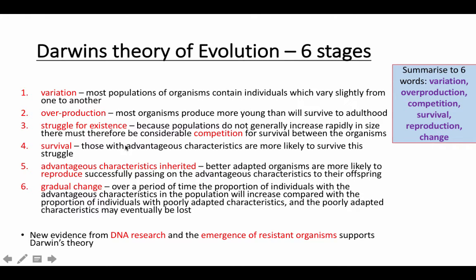Number 4 — this is the key — survival. Those with advantageous characteristics are more likely to survive. Those who have features or adaptations to allow them to survive in their environment will be the ones who survive and then reproduce. For example, if you had 10 lions and 3 of those lions were faster and stronger than the other 7, who would survive? It would be the stronger and faster ones. And then they would go on and reproduce, passing on those features to their young.